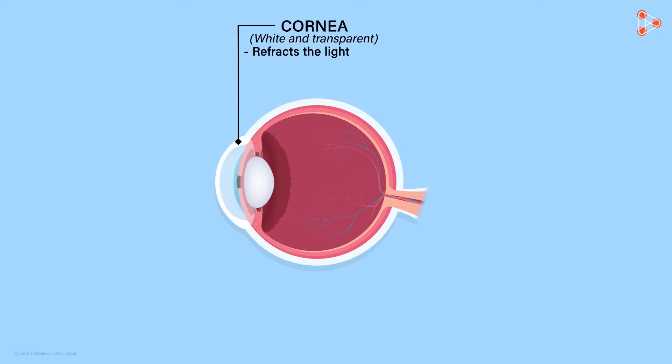But the cornea not only refracts light but also protects the inner parts of the eye. It acts like a tough front wall of the eye, protecting the interior from accidents and not allowing foreign particles to enter. So this was all about the outer layer of the eye.